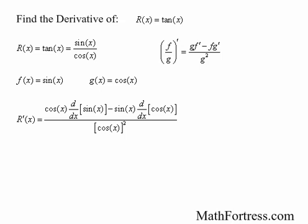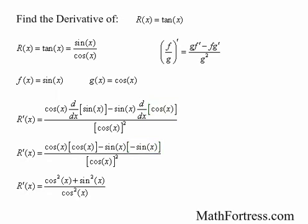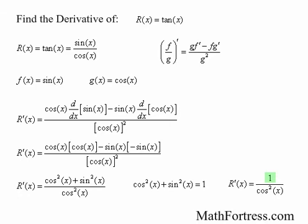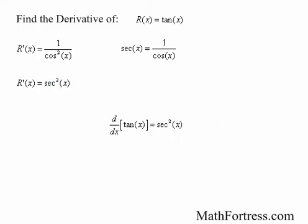Applying appropriate differentiation rules, the derivative of sine is cosine and the derivative of cosine is negative sine. Simplifying the expression, we can rewrite cosine squared plus sine squared of x using the trigonometric identity cosine²(x) + sine²(x) = 1, and substitute the numerator with just 1. So the derivative of r(x) is equal to 1 over cosine squared of x. Since the reciprocal of cosine is secant, we rewrite this as secant squared of x. The derivative of tangent equals secant squared of x.